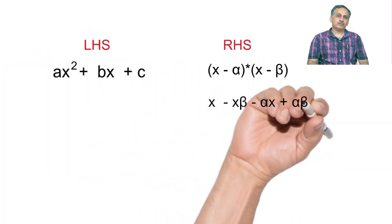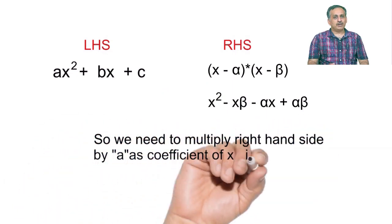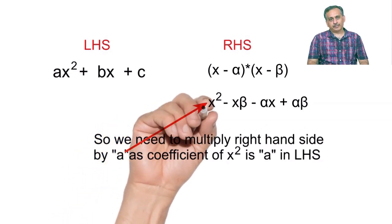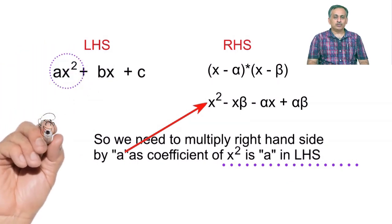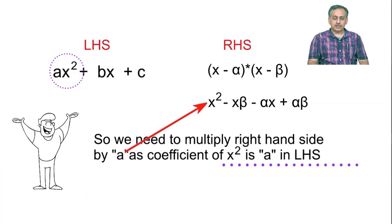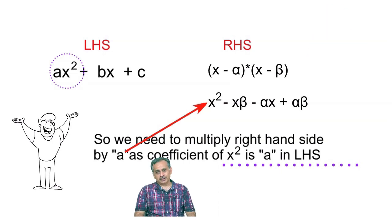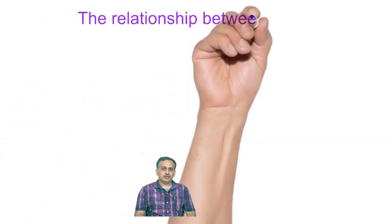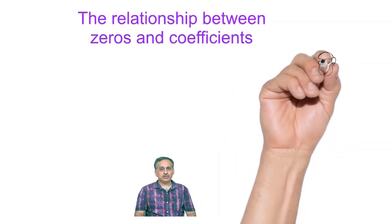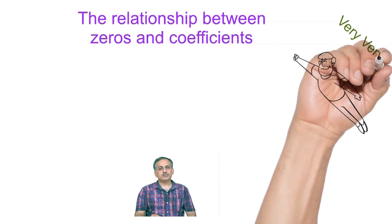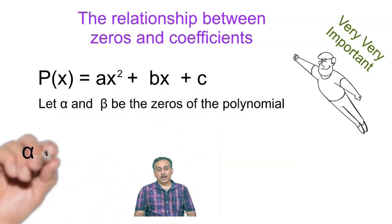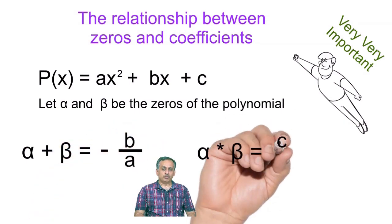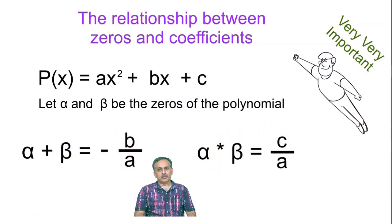So ax square plus bx plus c is equal to a times (x minus alpha)(x minus beta). Note that the right-hand side must be multiplied by a to match the coefficient of x square on the left. From this, the relationship between zeros and coefficients is: alpha plus beta is equal to minus b by a — that is, minus coefficient of x upon coefficient of x square — and alpha into beta is equal to c upon a, which is the constant term upon coefficient of x square.